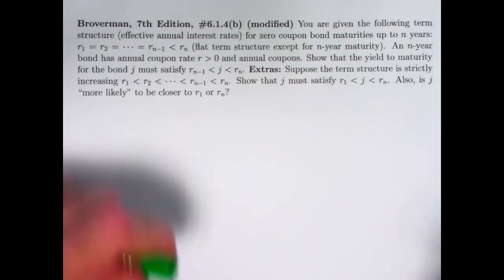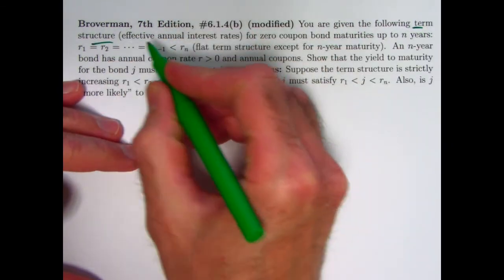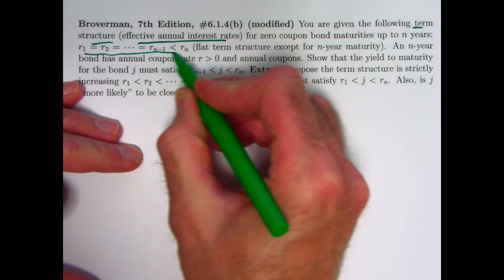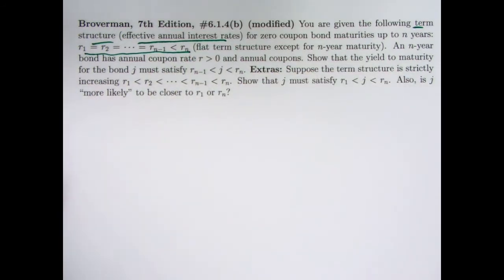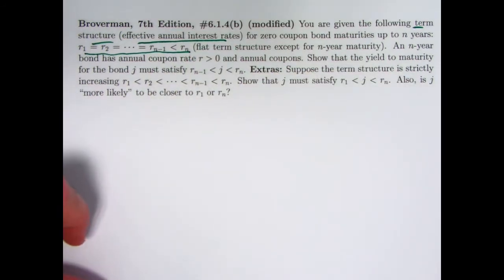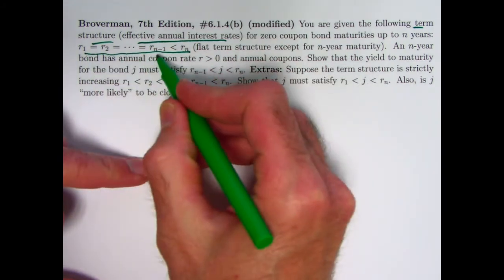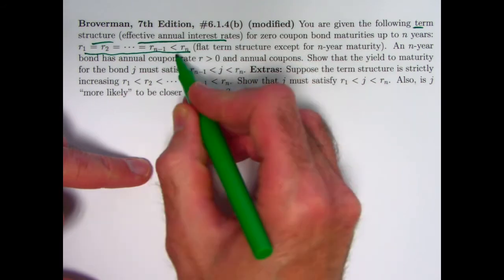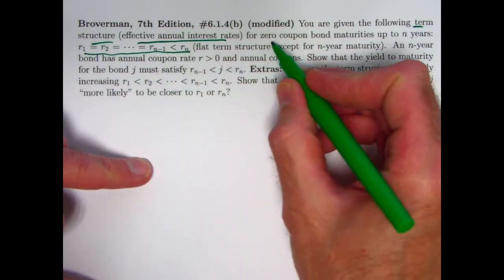So here is the problem. You are given the following term structure. These are effective annual interest rates. In this problem, to keep things simple, we're going to assume the coupons are paid annually instead of semi-annually. You can see the first n−1 of them are all equal, and the last one, r_n, is greater than all the ones that precede it.